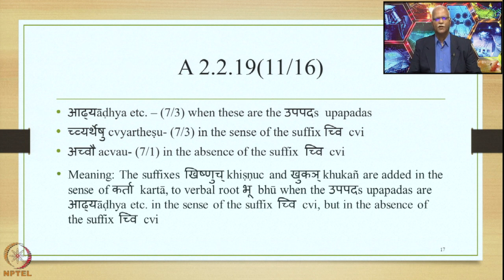Putting it all together, the meaning of Sutra 3.2.57 is: the suffixes Kishnuch and Khukai are added in the sense of Karta to the verbal root Bhu, when the Upapadas are Adhya, Subhaga etc., also in the sense of the suffix Chvi (Abhuta Tadbhava), but in the absence of the suffix Chvi.